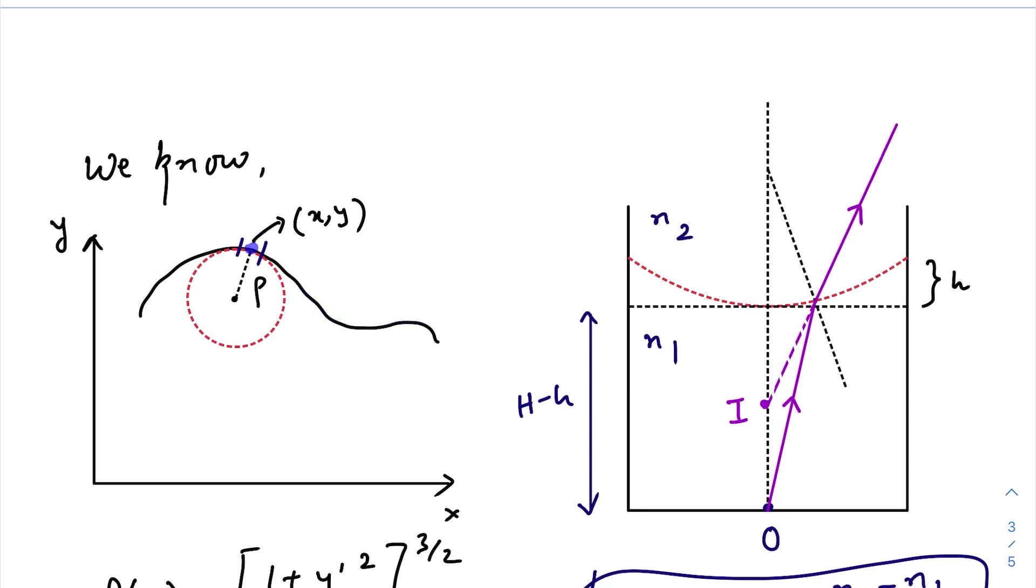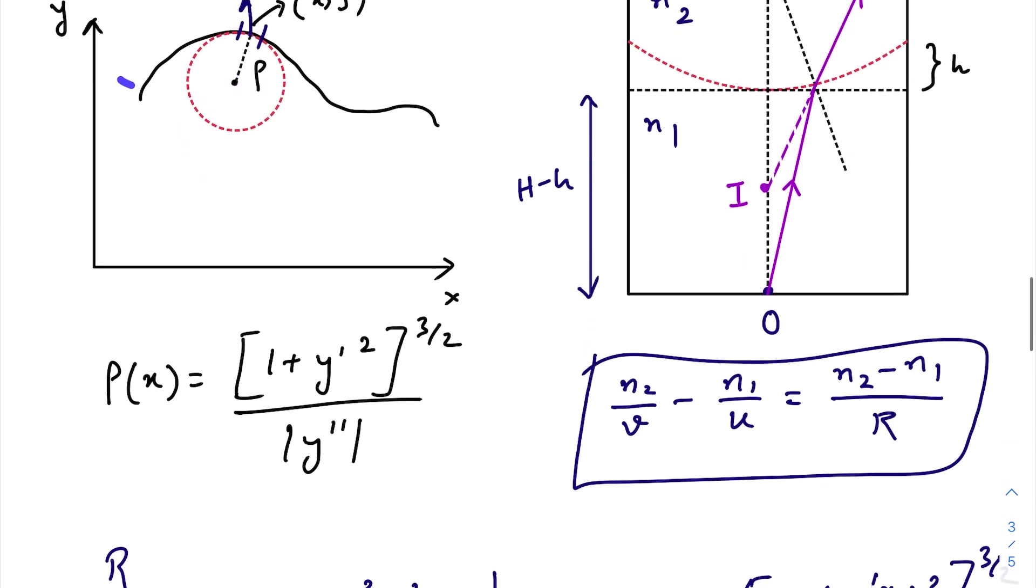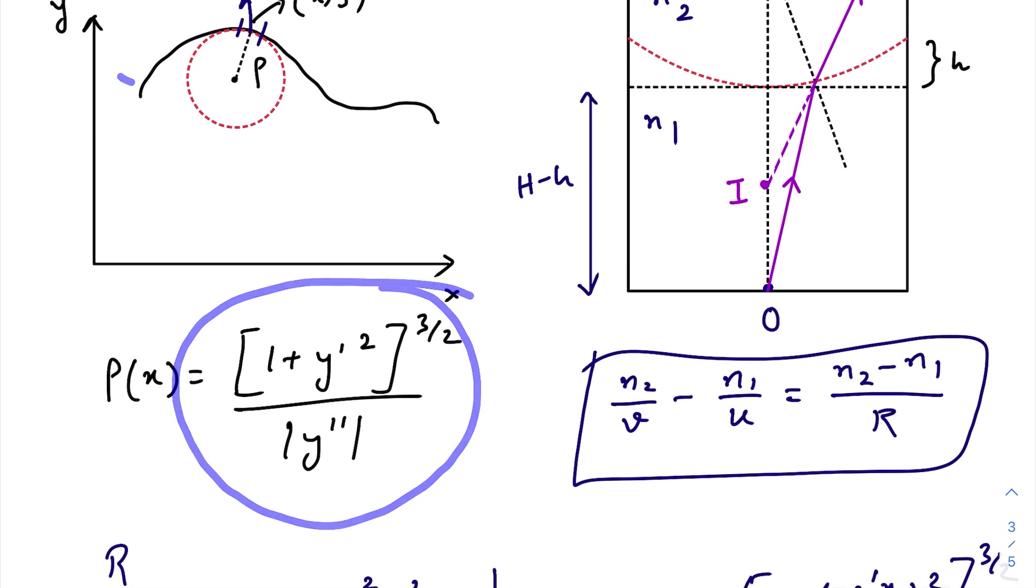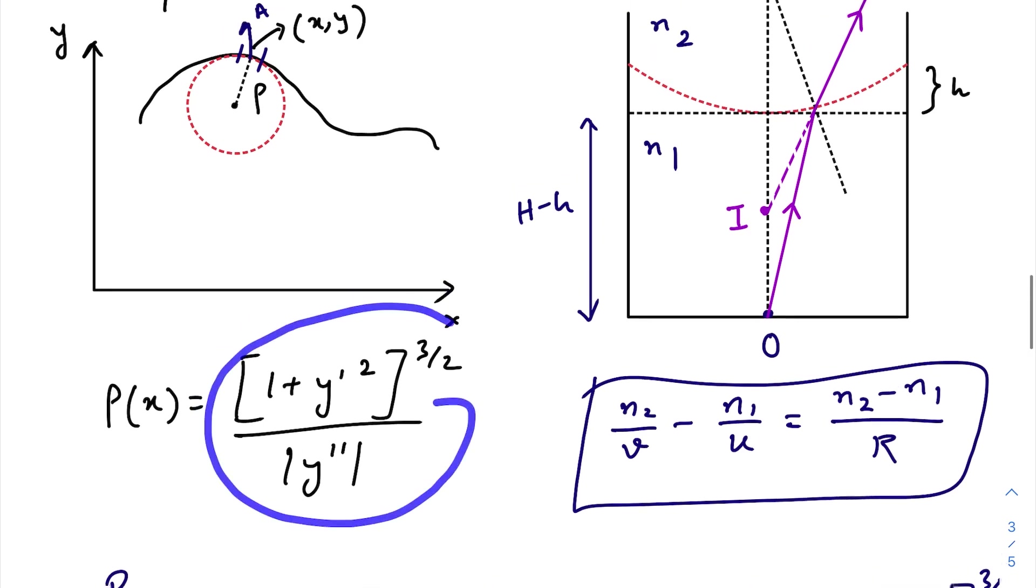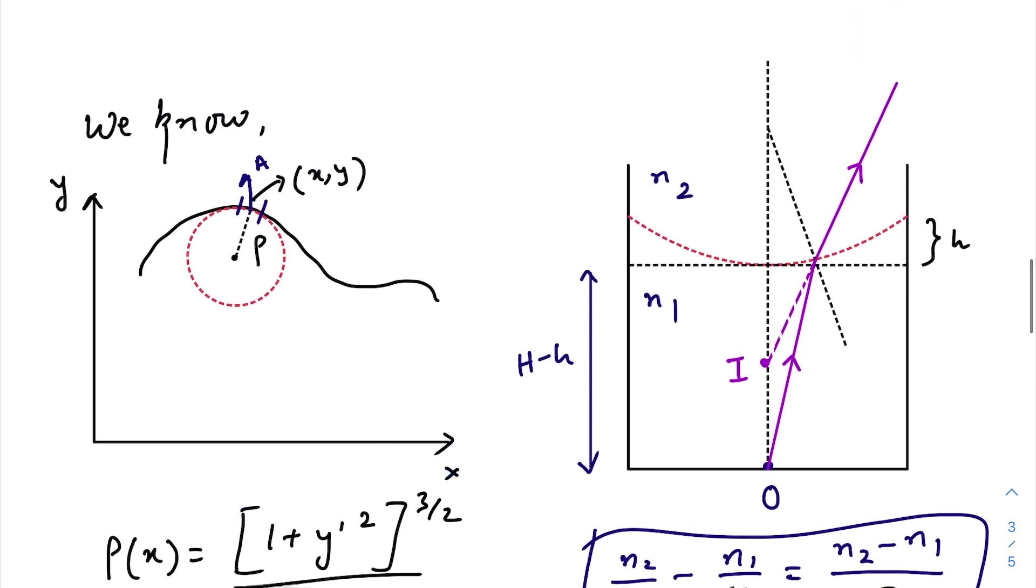See, this is a random curve. At any point P, or at any point A whose coordinates is x, y, I need to find out the radius of curvature. So the expression for radius of curvature as a function of x is this one. I have already discussed this kind of equation in my earlier videos. We'll be using this one.